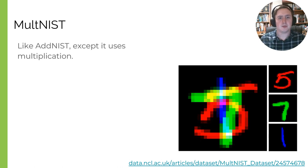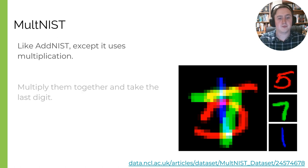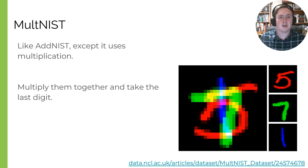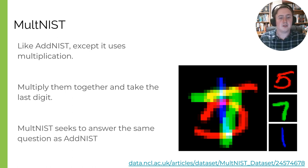MNAS is very similar to ADNAS but instead of summation, it uses multiplication. The three channels are multiplied together and you take the last image. This solves a problem that ADNAS has, which is that high numbers mean you can't have any of the lower classes. Because we are doing multiplication, this is not necessarily the case. Because of this, MNAS asks the same question as ADNAS but potentially does it a little bit better.